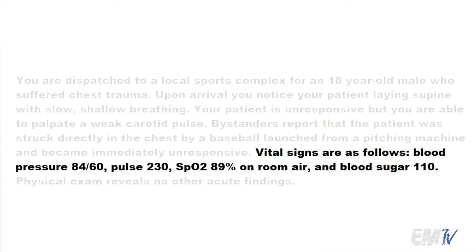Vital signs are as follows: blood pressure is 84 over 60, pulse of 230, SpO2 89% on room air, and blood sugar is 110.